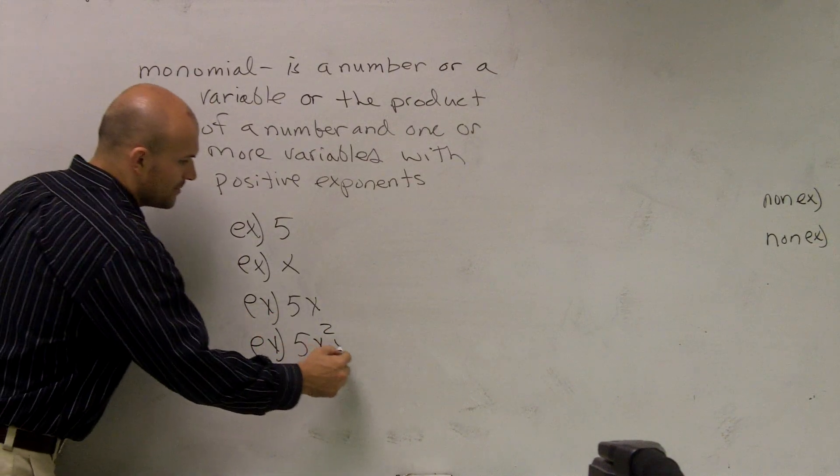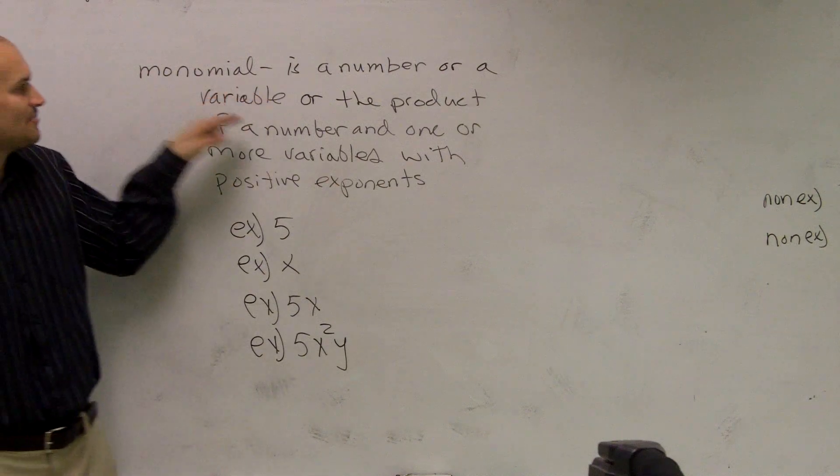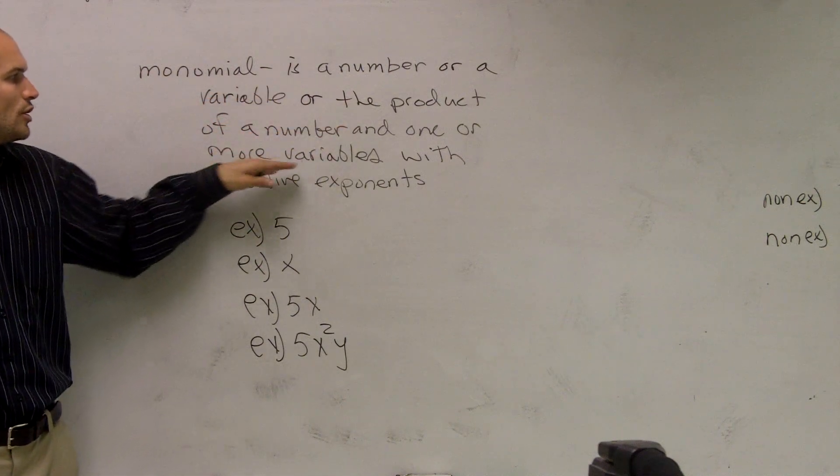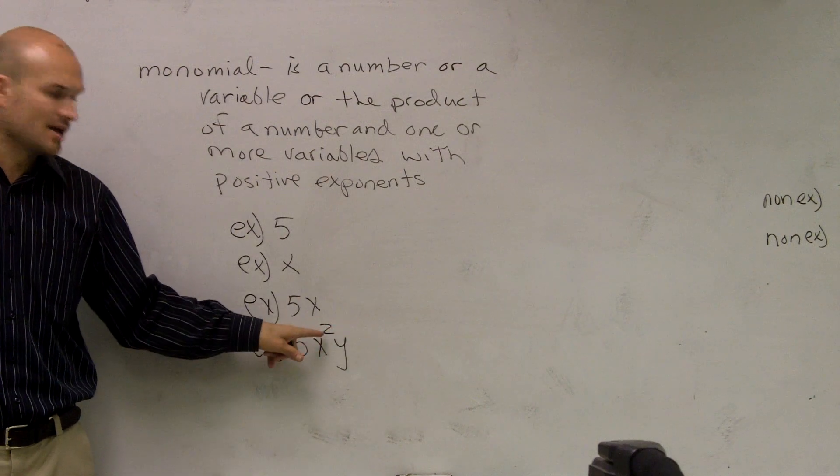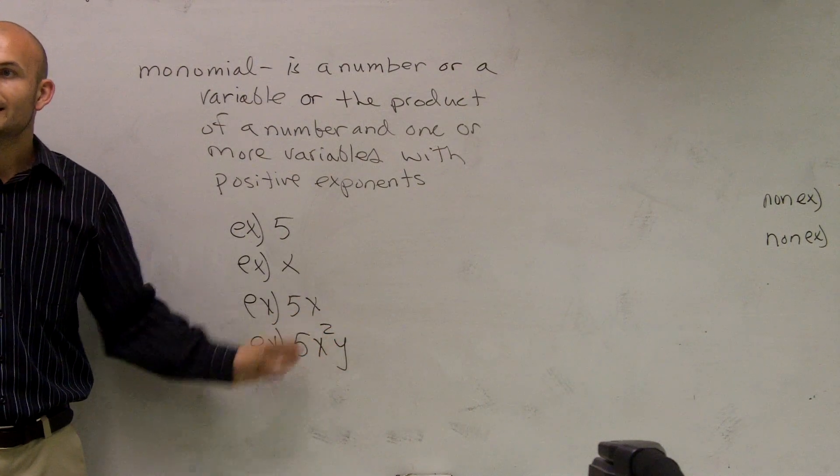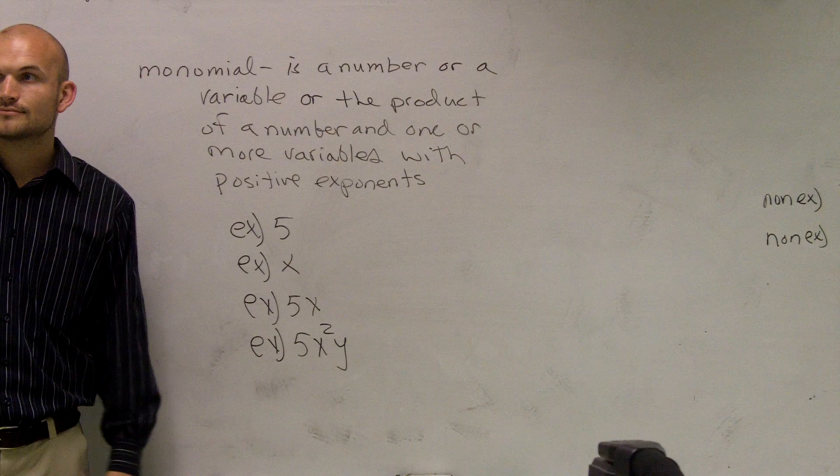And I could even multiply another one. Because what it said is, it's the product of a number and one or more variables. So it doesn't matter how many variables I have, as long as my exponents are positive, it's still going to contain a monomial.